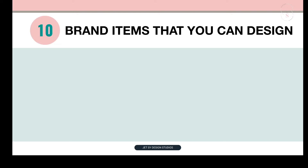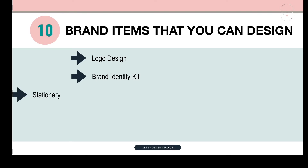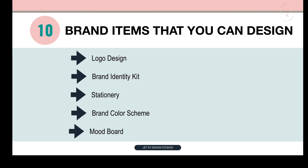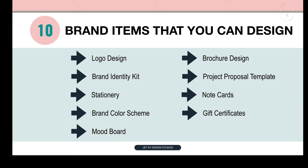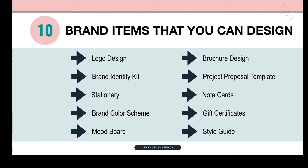Here are 10 brand items that you can design beautifully in Canva: a logo design, brand identity kit, stationery, brand color scheme, mood board, brochure design, a project proposal template, note cards, gift certificates, and style guides. And here are the samples — we have a logo and a mood board.